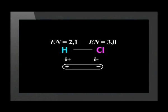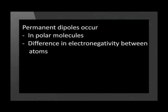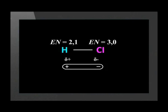In a hydrogen chloride molecule, a positive and negative pole is formed because of the electronegativity difference between the two atoms — we say that a permanent dipole is formed. A permanent dipole arises due to the shift in the position of the bonding pair of electrons because of differences in electronegativity between the atoms in the molecule. The chlorine atom has an electronegativity of 3.0 while the hydrogen atom has an electronegativity of 2.1, so the bonding pair of electrons is found closer to the chlorine atom than the hydrogen atom.